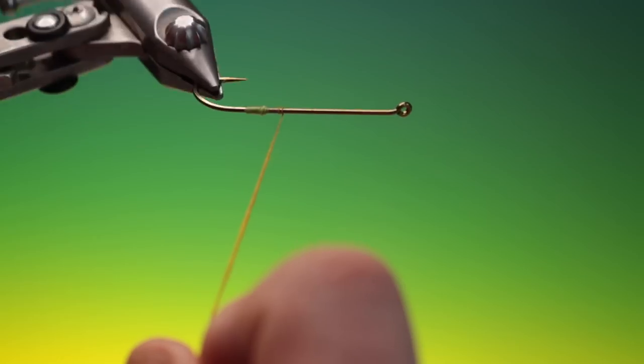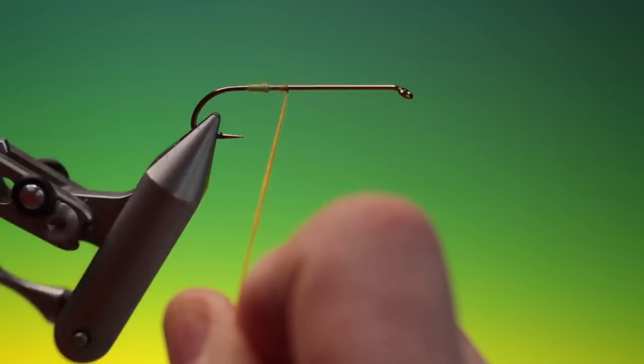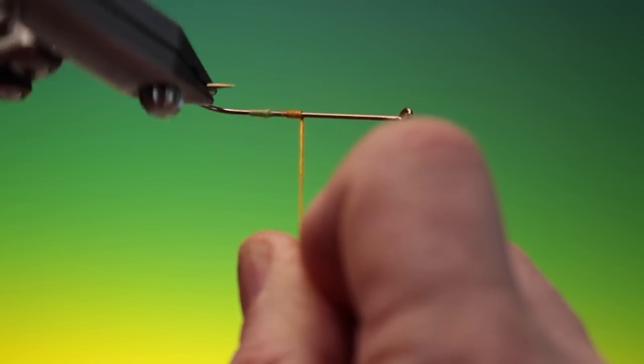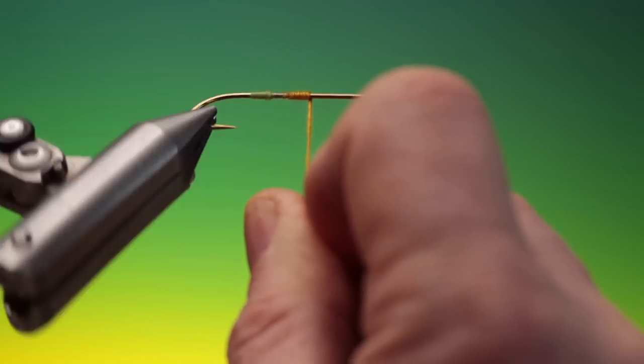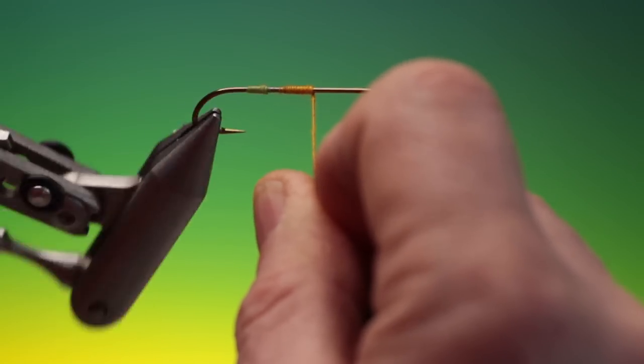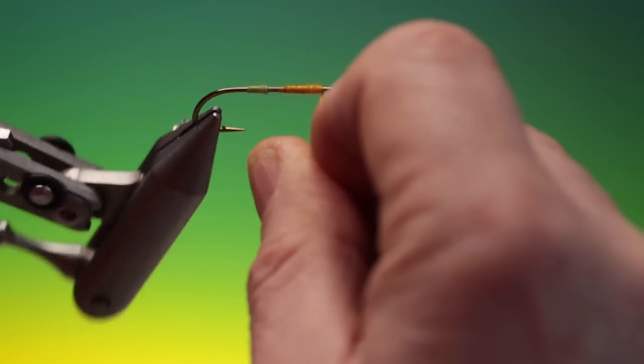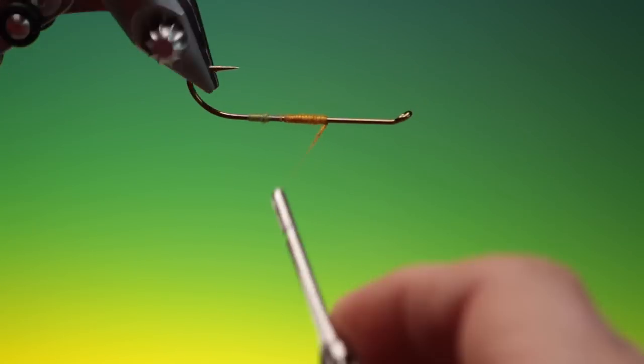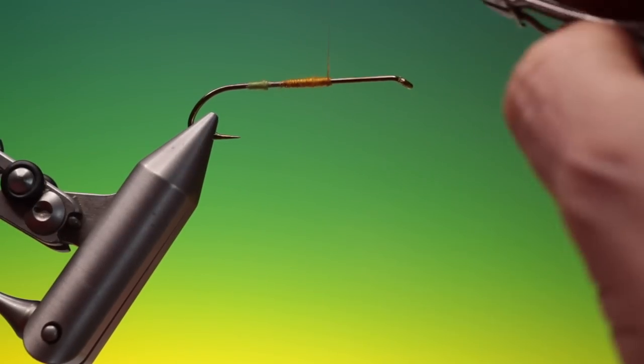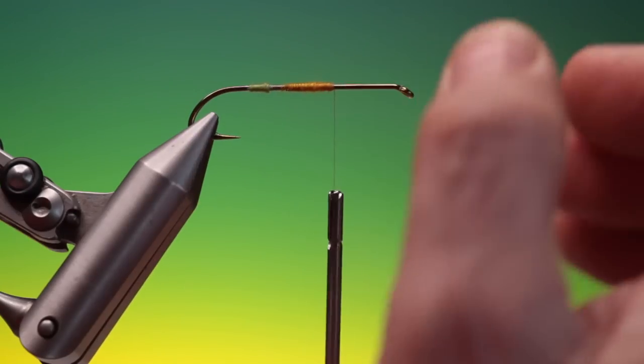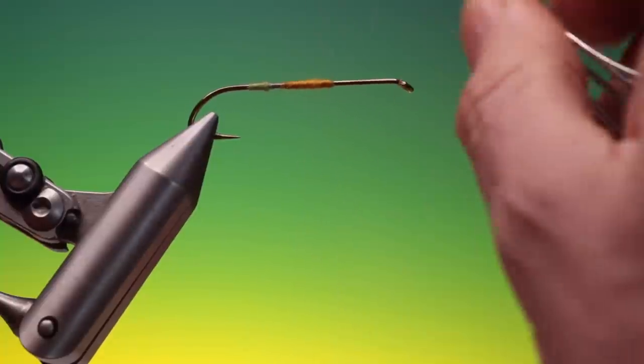Now I'll take my vise. And I'll rotate keeping the dubbing tight all the time. And then we can just finish that off. So that's a segmented dry fly dubbing technique.